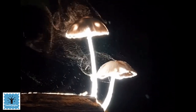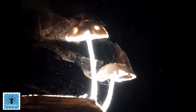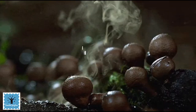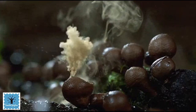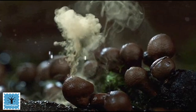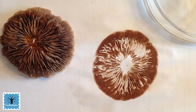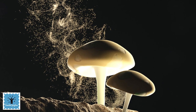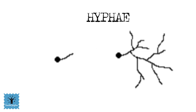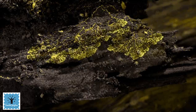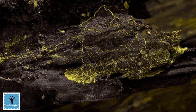The spores just wait to land in a favorable place to germinate and continue through their life cycle once again. The spores blow away into the wind or are spread by other means, such as animal feeding. These spores are like seeds — if they land on a suitable surface such as wood or soil, they can easily grow and germinate.